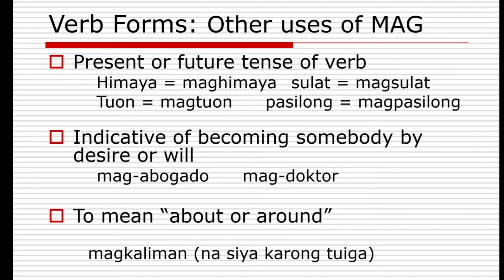'Mag' can also be used as the present tense of a verb: 'mag-himaya', 'mag-toon', 'mag-sulat', 'mag-pasilong'. 'Mag' is also an indicator of becoming somebody by desire or will — for example, 'mag-abogado' means to be a lawyer, 'mag-doktor' means to be a doctor. Note: there should be no hyphen between 'mag' and 'doktor' because 'd' is a consonant. The rule is that a hyphen is used only when 'mag' is followed by a vowel.